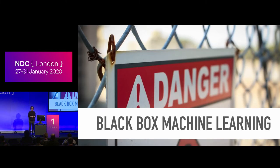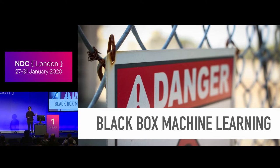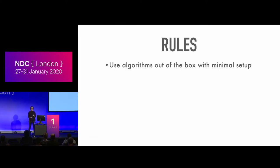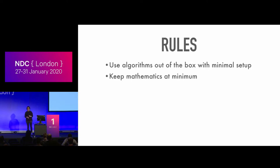I called it black box machine learning because a lot of people don't really want to understand the mathematics, or even if they do, they just want to run an algorithm — using it as a black box with some input data, some parameters, some outputs, and put it into production. The rules for today: I'm going to use algorithms from popular libraries with minimal setup, keep mathematics to a minimum, and just observe when things go wrong.